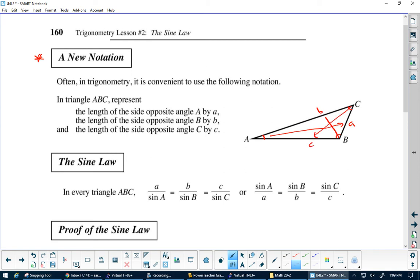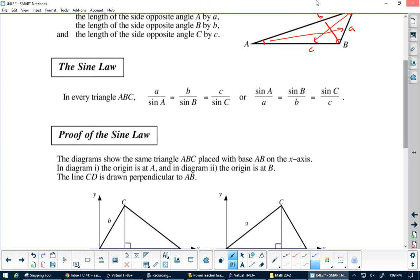The sine law when it's in this form looks kind of complicated but when you see how to use it it's pretty nice. This is a over sine A equals b over sine B equals c over sine C, or you could flip everything and have sine A over a, sine B over b, and sine C over c. I'm not going to go through the proof of it, let's just get using it.